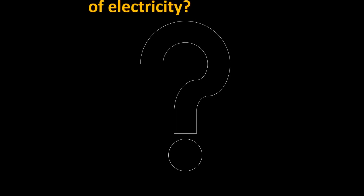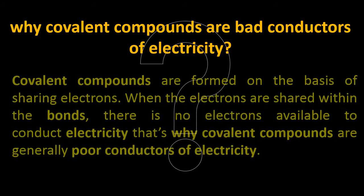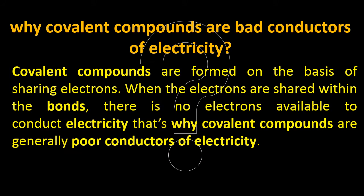A very important exam question: why are covalent compounds bad conductors of electricity? Covalent compounds are formed on the basis of sharing electrons. When electrons are shared within the bonds, there are no free electrons available to conduct electricity. As we know, current flow means the movement of free electrons. In covalent linkages there are no free electrons available, so covalent compounds are generally poor conductors of electricity.